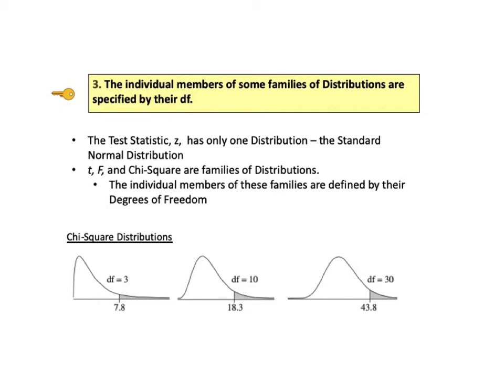KTU number 3 says the individual members of some families of distributions are specified by their degrees of freedom. The test statistic Z has only one probability distribution, and that is the standard normal distribution. But the probabilities for other statistics like t, F, and chi-square are described by families of distributions. The individual members of these families are defined by their degrees of freedom.